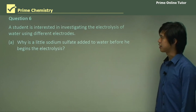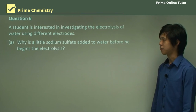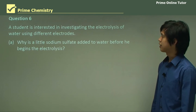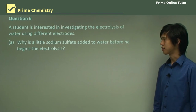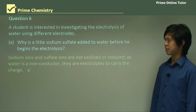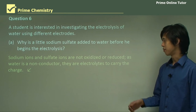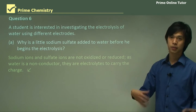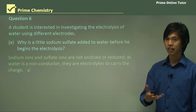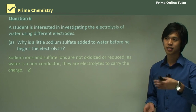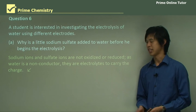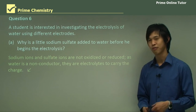Question 6: A student is investigating the electrolysis of water using different electrodes. Why is a little sodium sulfate added to water before beginning electrolysis? Sodium ions and sulfate ions are not oxidized or reduced, so they won't participate in the electrolysis. However, because water is a non-conductor, it requires some ions to allow current to pass. So we need a small amount of ions just to get things going — that's why a small amount of sodium sulfate is added.